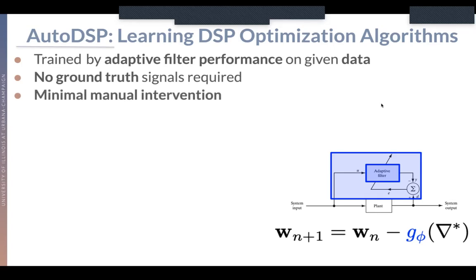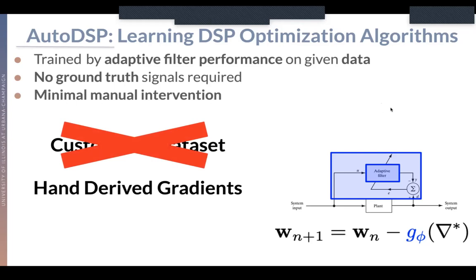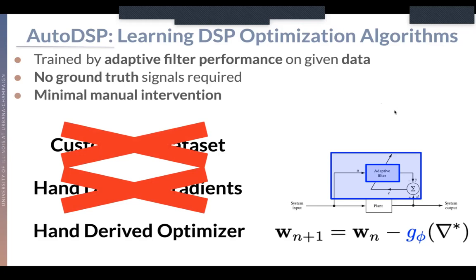By following this procedure, we perform next to no manual intervention, since we use the adaptive filtering setup that was already in place. Custom datasets in order to deploy the solution — not needed. Hand-derived gradients in order to get a better optimizer — not required. And any sort of hand-derived optimizer setup isn't used in this approach either.